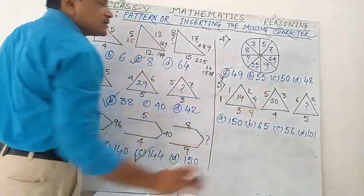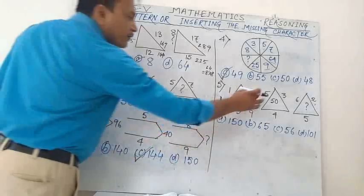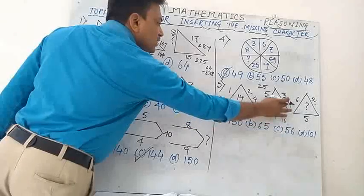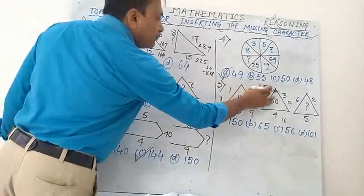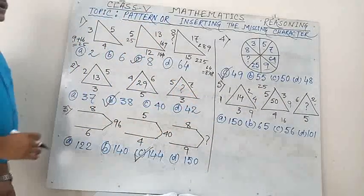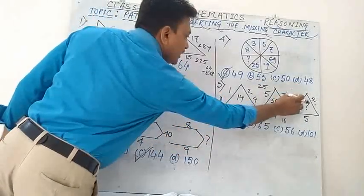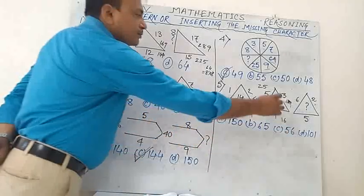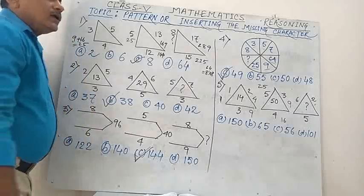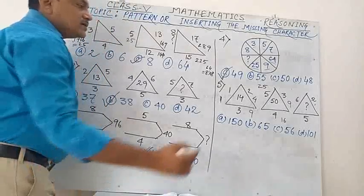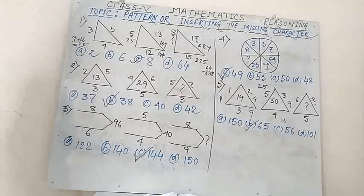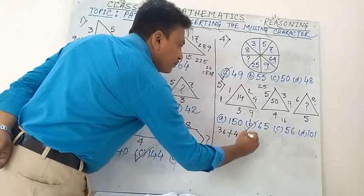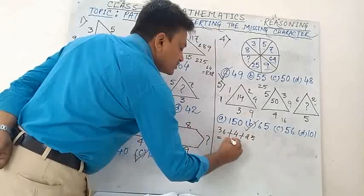So what will be the third one? 6×6 = 36, 2×2 = 4, 5×5 = 25. So 36 + 4 + 25 = 65. Option B is the correct answer.